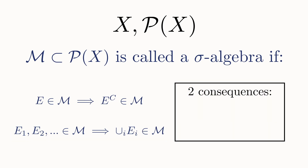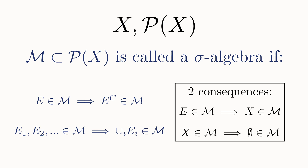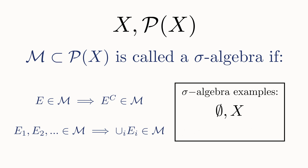I'd like to point out two direct consequences of this definition. First, since M is non-empty, there is some set E in the collection. Since M is closed under complements, the complement of E must also be in M. But E together with its complement is just the entire set x, so x must also be in M. Secondly, since x is in M and M is closed under complements, the complement of x — the empty set — is also in M. This holds for all sigma algebras, so any sigma algebra will always contain the entire set x as well as the empty set. This small collection is actually already an example of a sigma algebra, and another example is the entire power set.